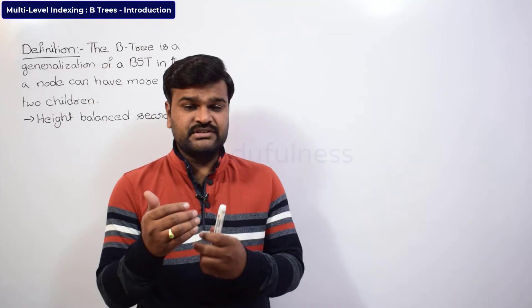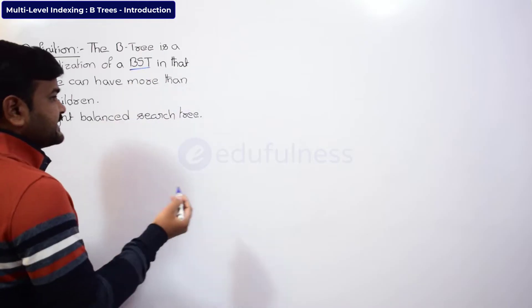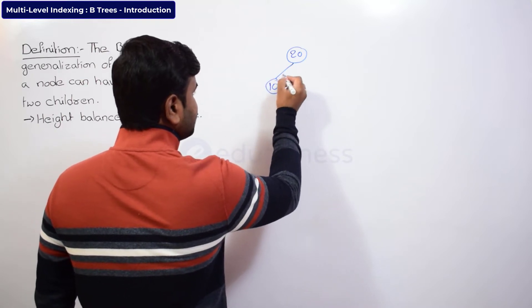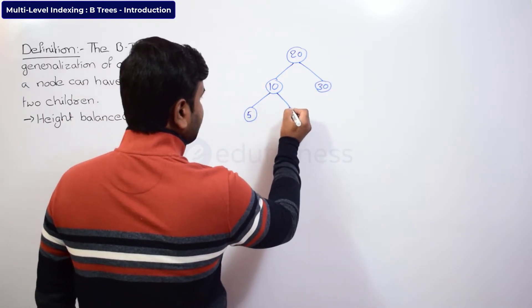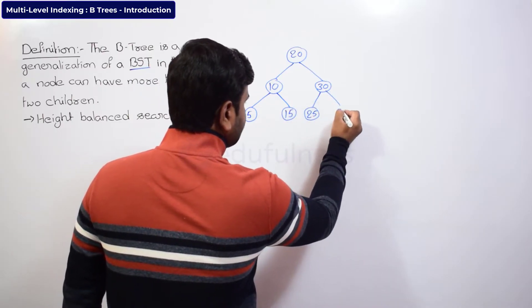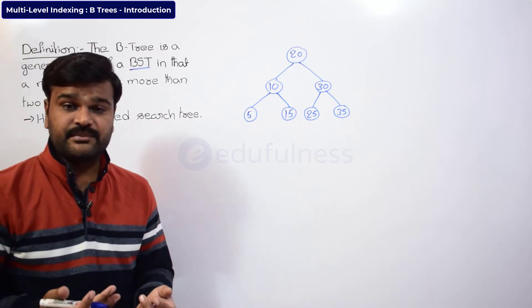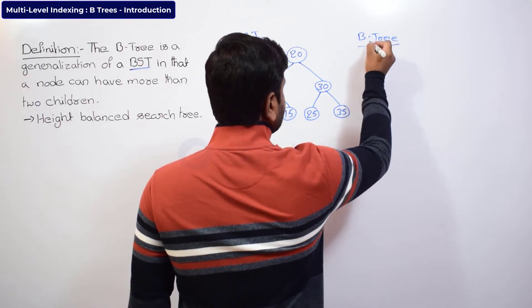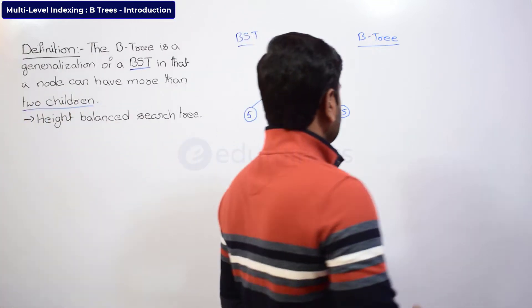Let us quickly visualize how B-trees look. Take a simple binary search tree example with nodes 20, 10, 30, 5, 15, 25, and 35. This is a binary search tree, and you can also call it a B-tree. Now let us look at another tree which is a B-tree where a node can have more than two children.